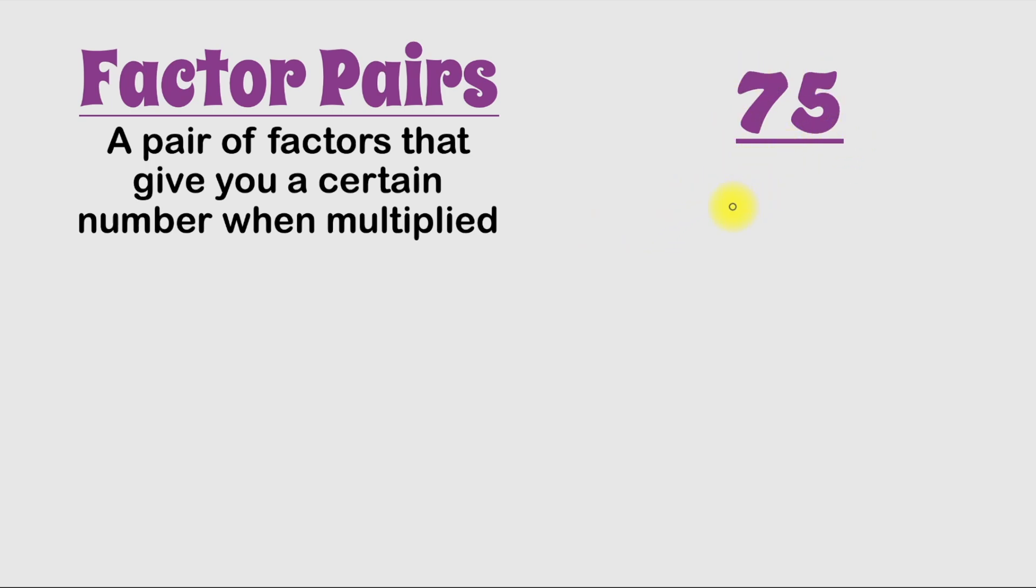The best way to start is by starting with the number 1 and the number itself. So that means our first factor pair will be 1 times 75. And this means that 1 is a factor of 75 and 75 is a factor of 75.